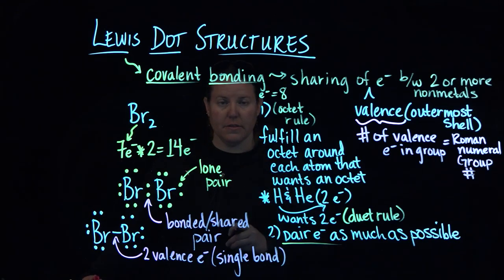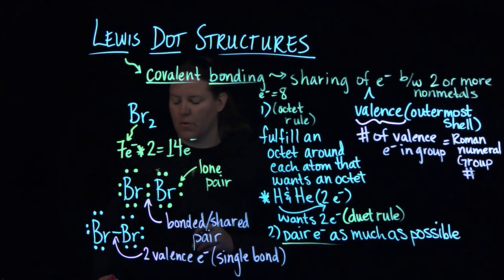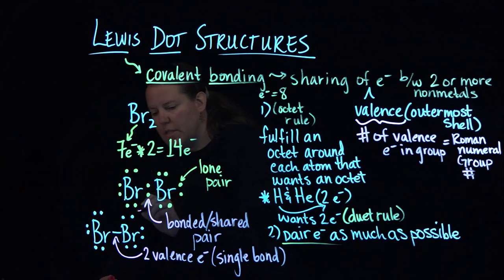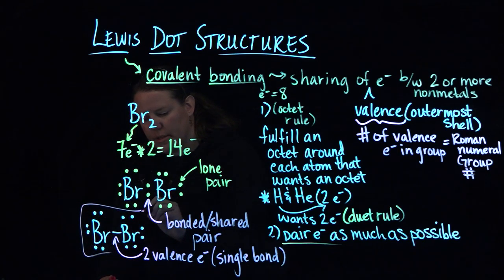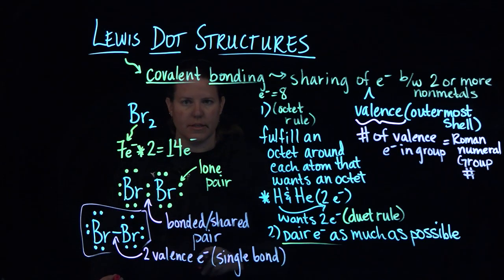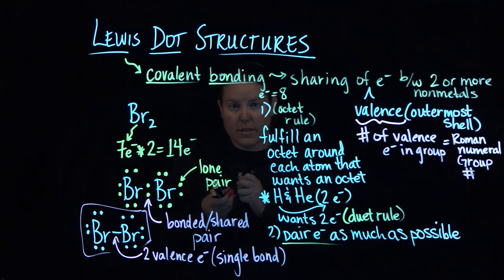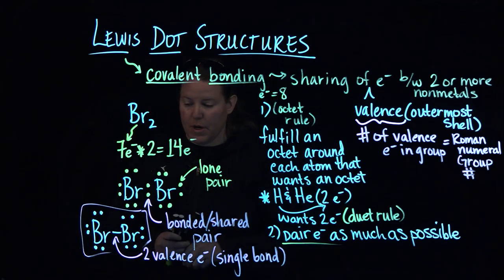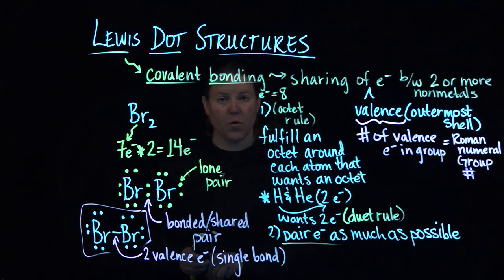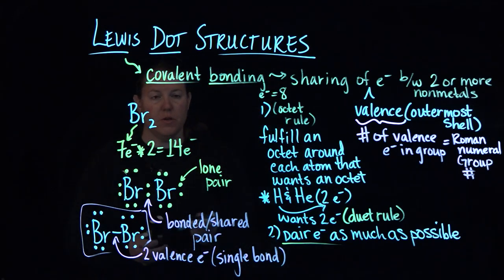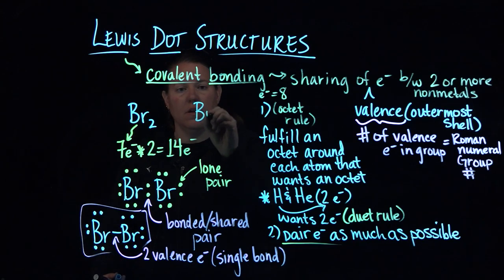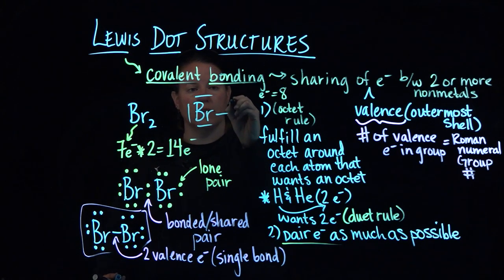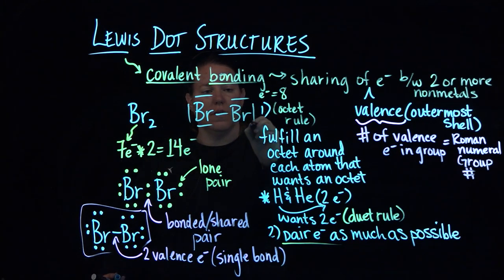You will always see me draw like this. The reason why I draw it like this, with the lone pairs as dots and the bonded pairs as lines, comes from the idea of what will happen when we calculate formal charge. But if you wanted to be super lazy, you could totally just line it out for everything too, and that's cool.